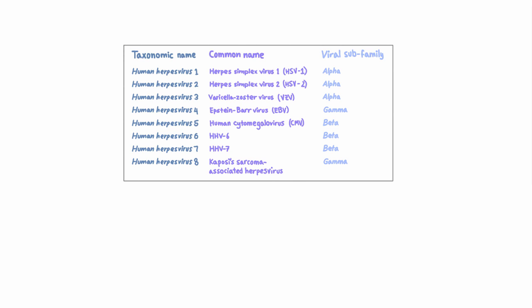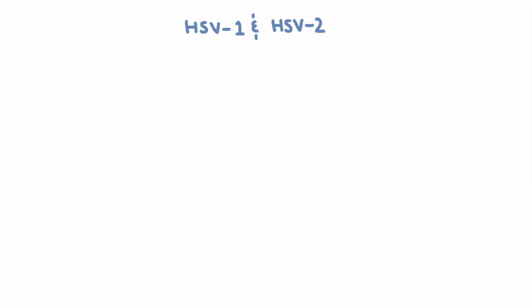The first herpes viruses we're going to talk about are HSV1 and HSV2, and they mostly cause mucocutaneous disease, meaning that they affect mucous membranes and the skin. Specifically, they usually affect the oral cavity or the genital area. Oral herpes is usually type 1, and genital herpes is usually type 2.